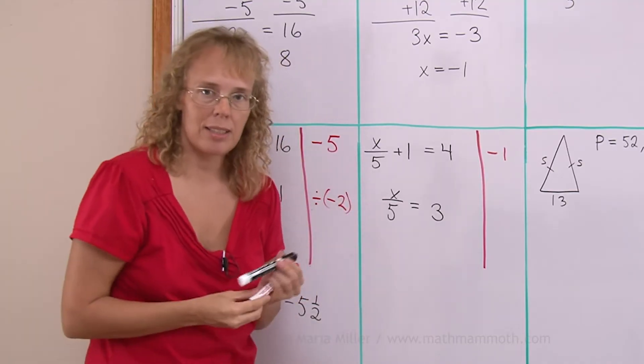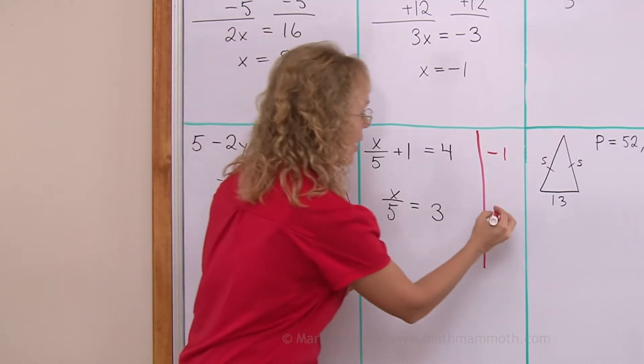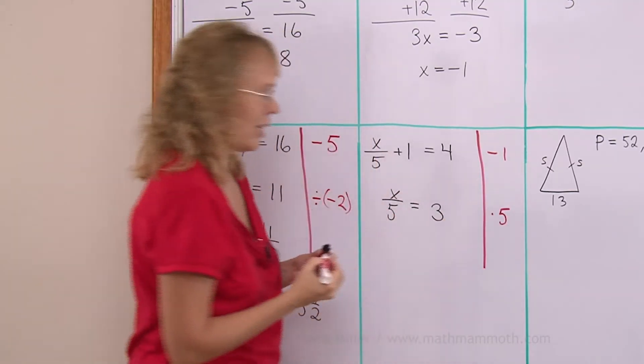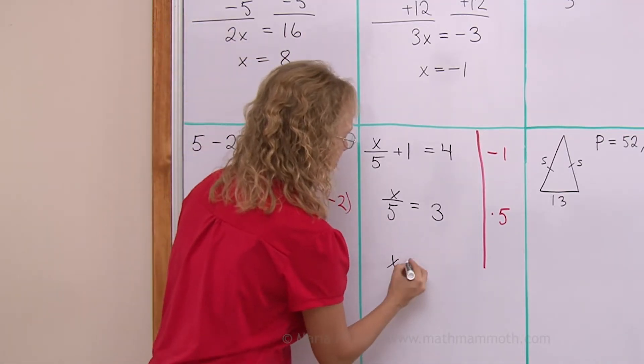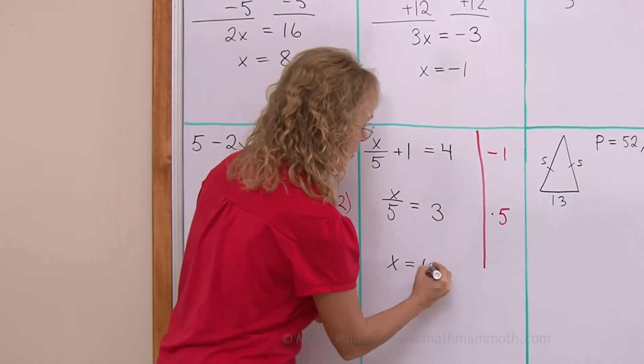And now x is divided by some number. So I multiply both sides by that number. By 5. So now it leaves x alone. And then here we go. 3 times 5. 15.